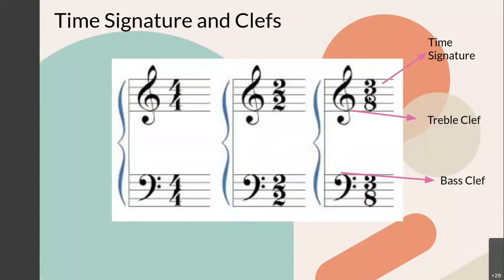A time signature tells us how one note will get the beat in the measure and how many beats per measure there are. So if you see all the way to the left in this first treble staff, you see that it's in 4-4 time. 4-4 time means that the quarter note will get the beat and there will be four beats per measure.